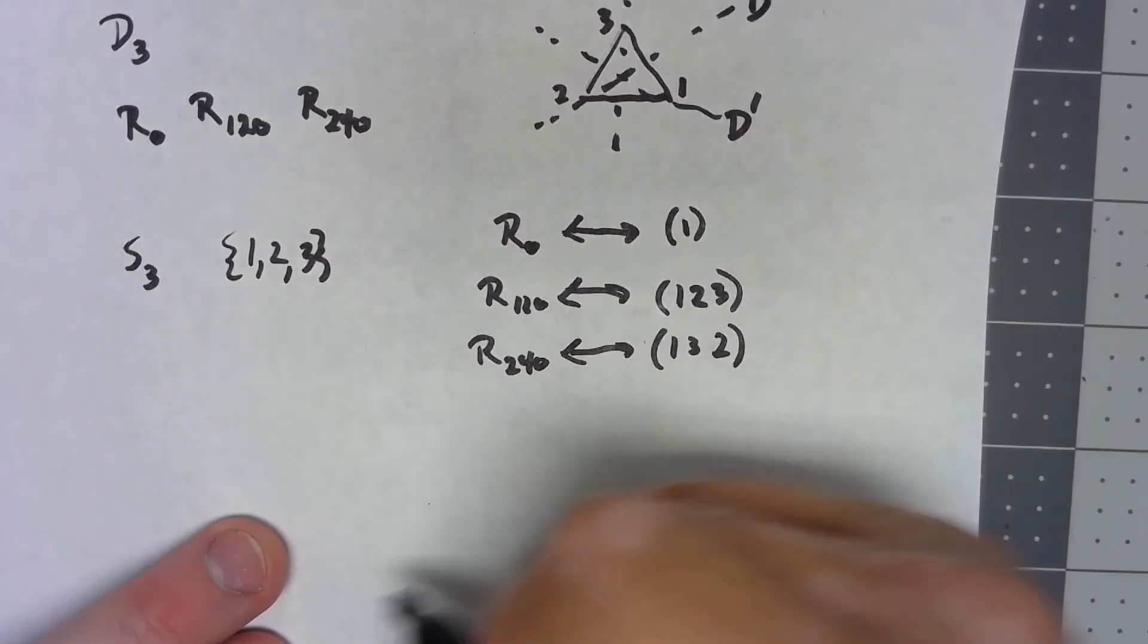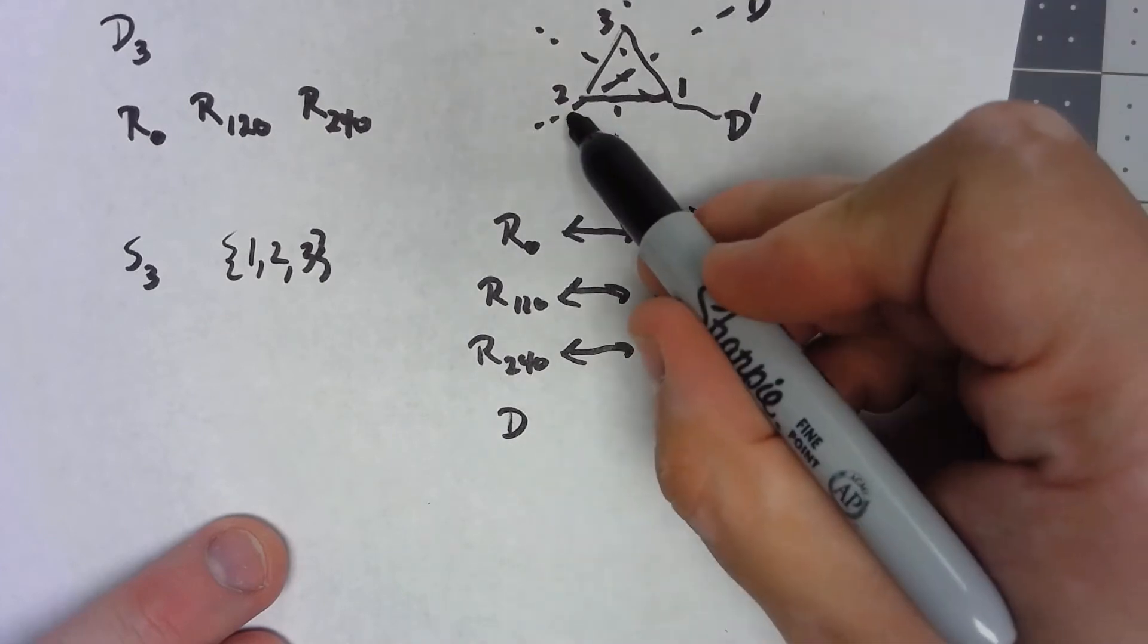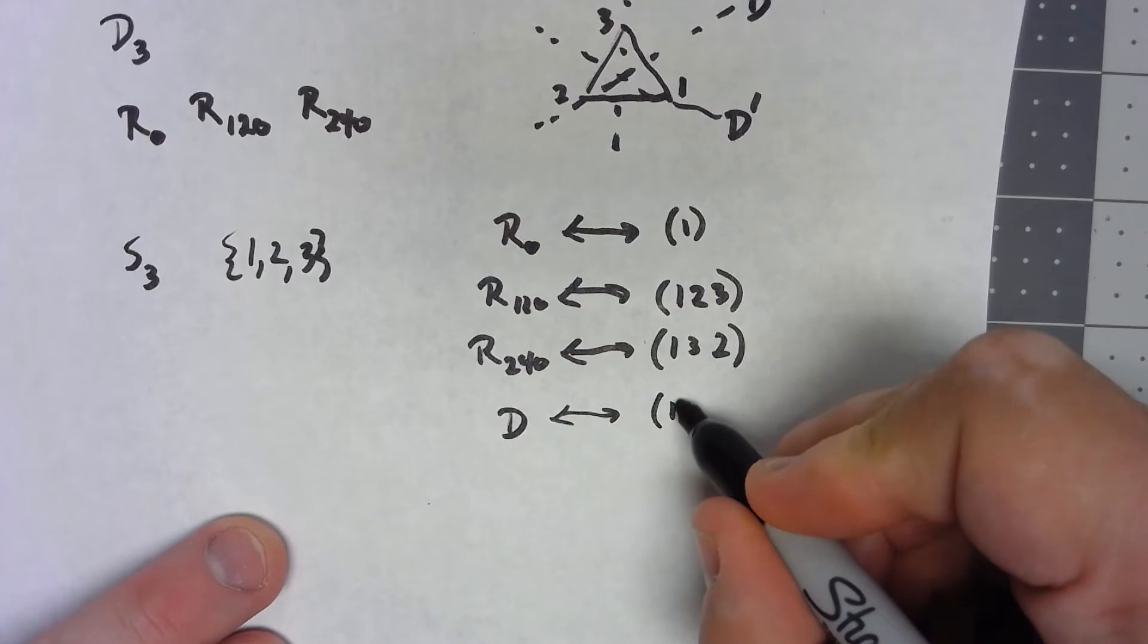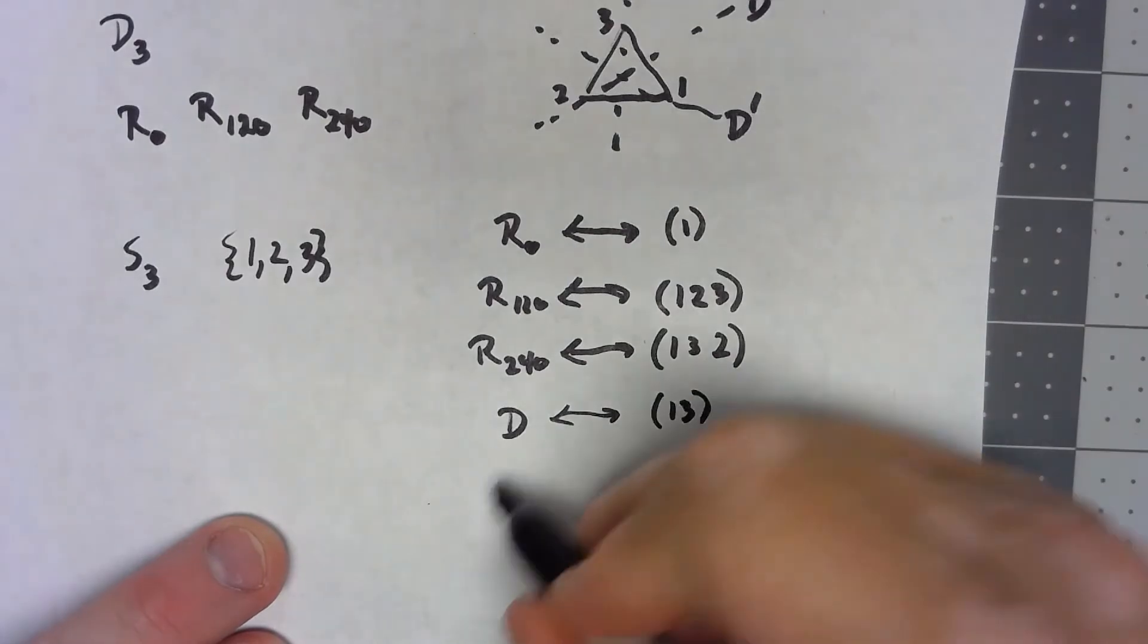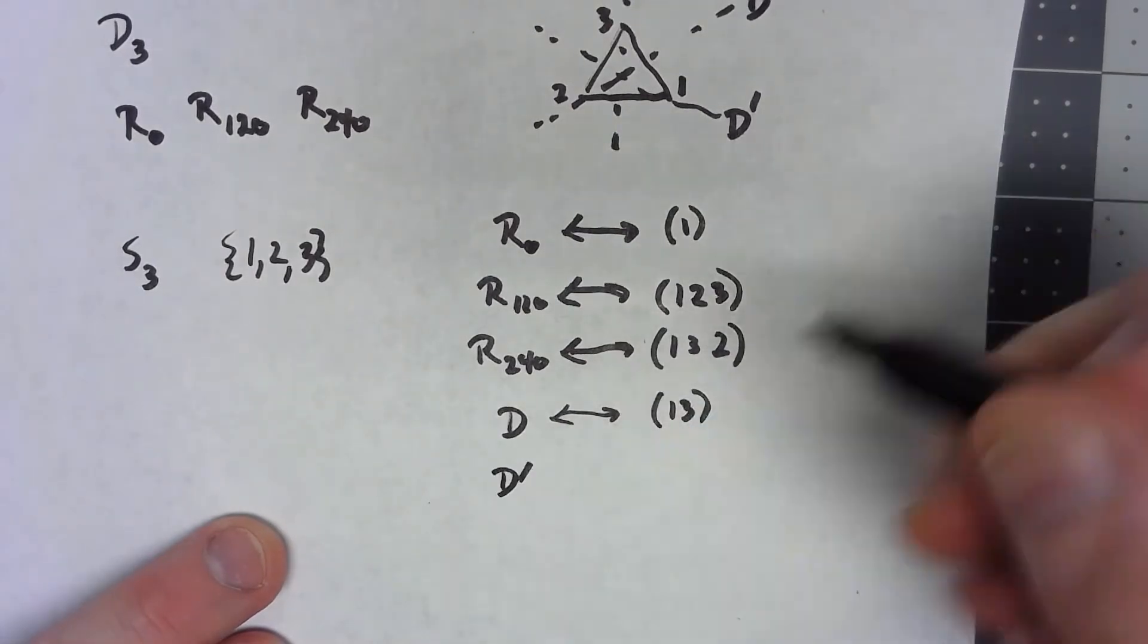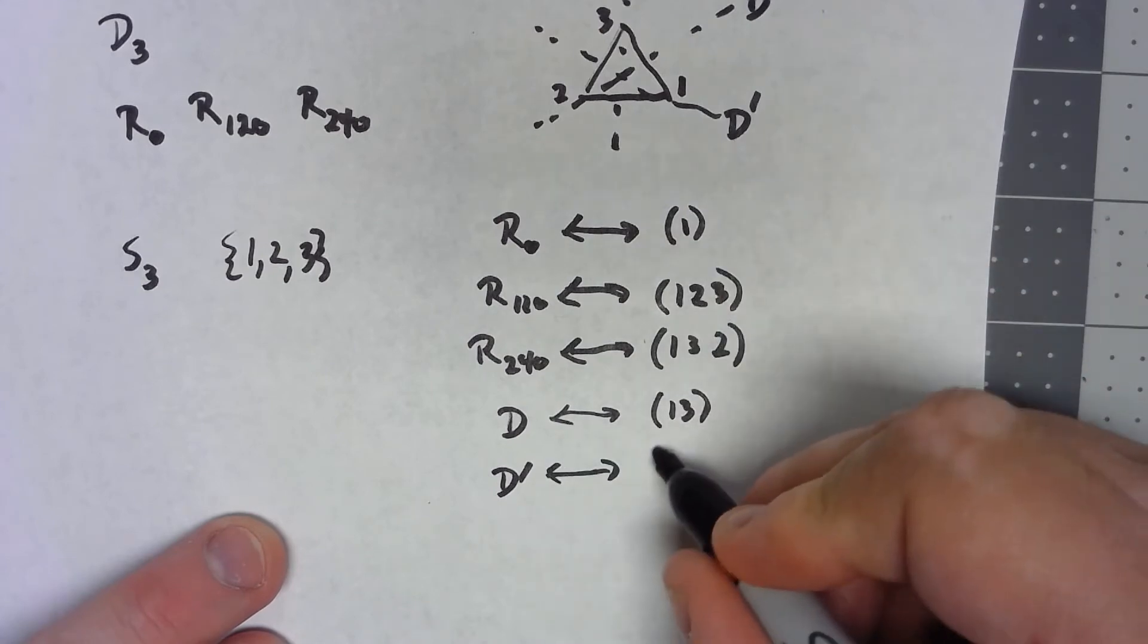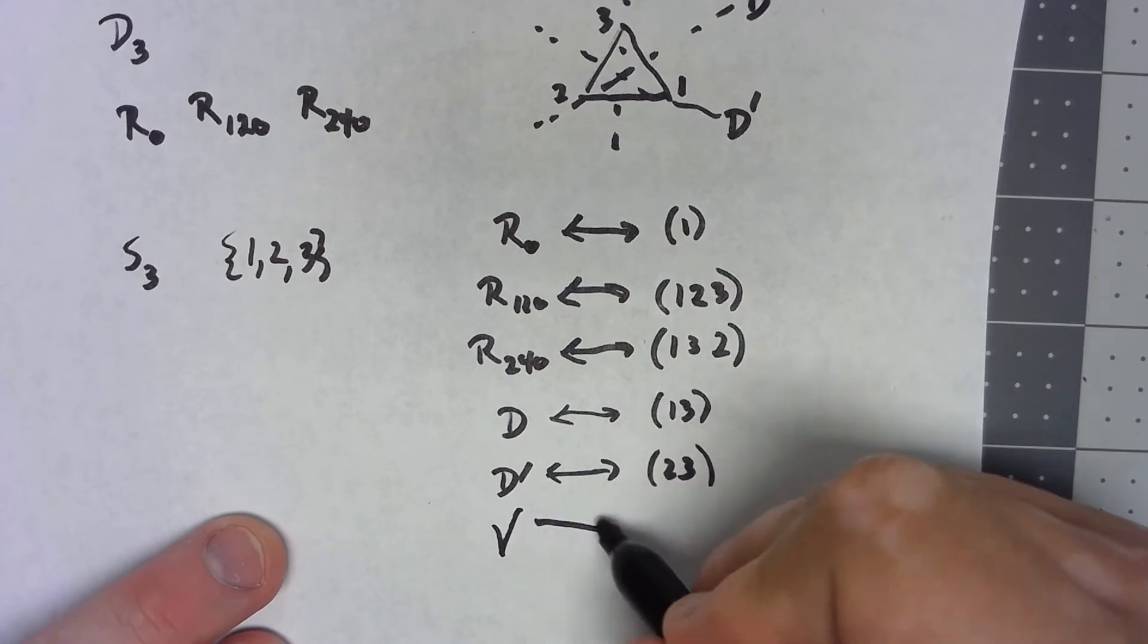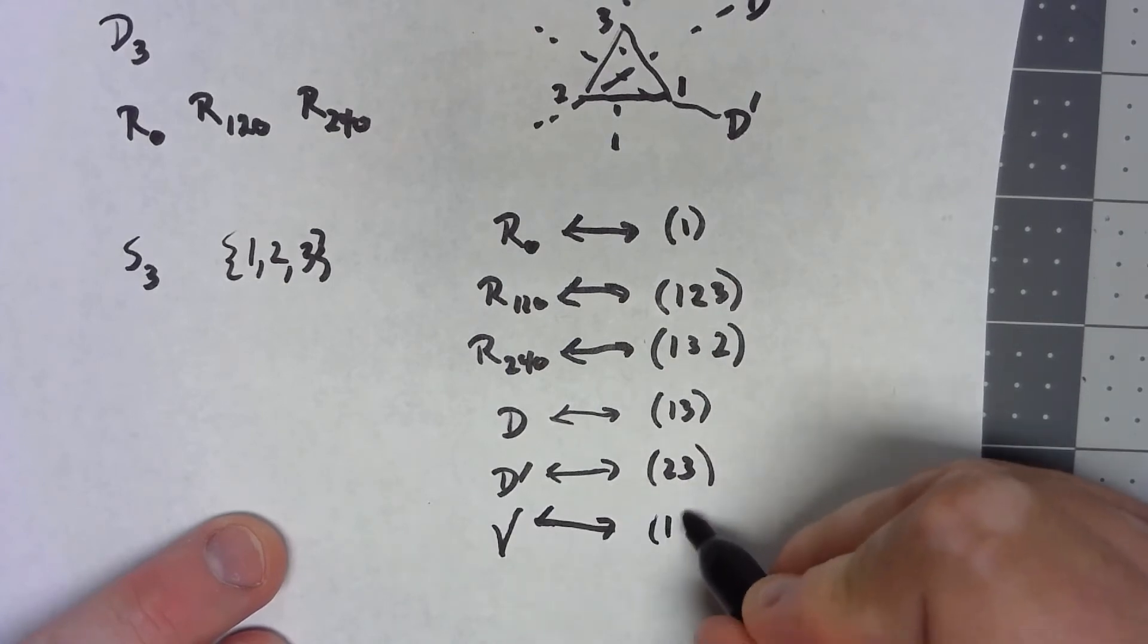Meanwhile, D keeps 2 the same, flips 1 and 3. D' keeps 1 the same, flips 2 and 3. DV keeps 3 the same, flips 1 and 2.